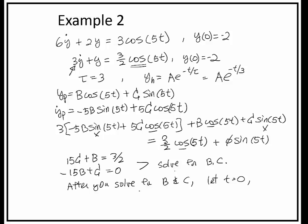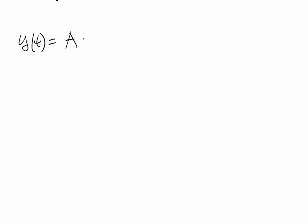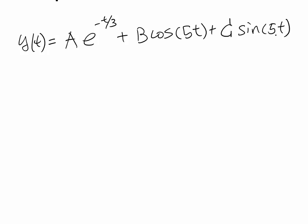After solving for b and c, we let t equal to 0 and apply the initial condition. The initial condition equals the homogeneous solution plus the particular solution, set equal to 0. From that we can go ahead and solve for the remaining constant a.